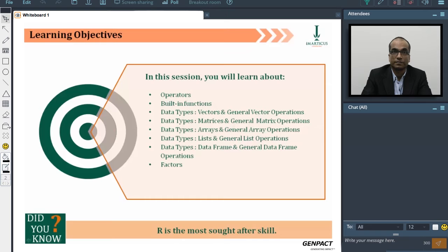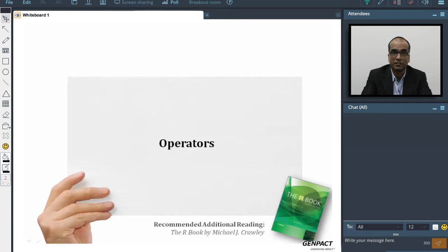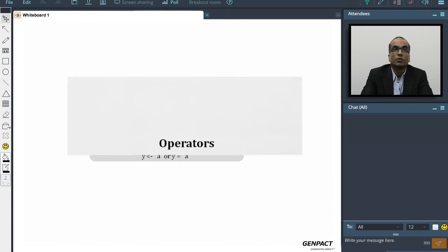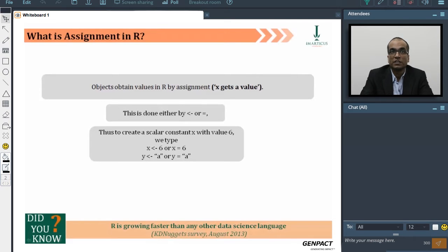So, operators—the basic operators which we usually know as mathematical operators. What is assignment in R? When you see a symbol like a less than with a dash, or a single equal to, that basically means an assignment operator. It usually goes from right to left, which indicates that some operation on the right is being done and that corresponding value is allocated to some term on the left hand side of the operator.